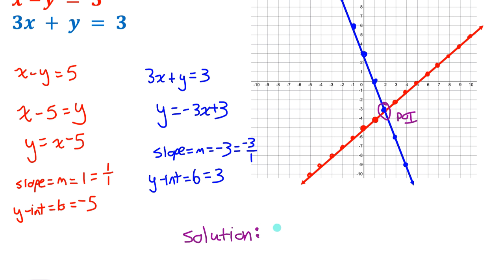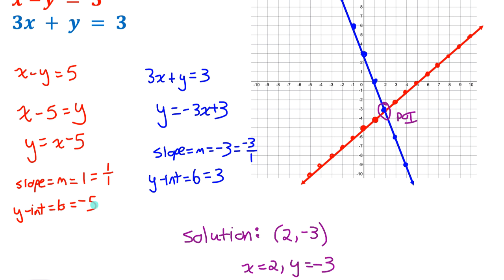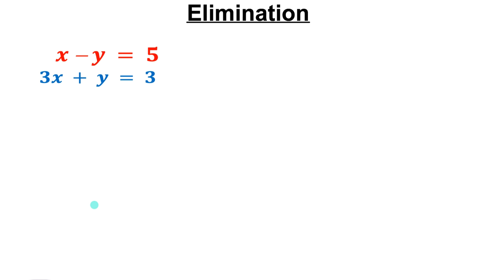The lines intersect at the point (2, −3). That's our point of intersection and the solution. You can write it one of two ways: as the point (2, −3), or as x = 2, y = −3. Either would be an acceptable way of writing the final answer. Now let's solve that same system using elimination and substitution — elimination first.